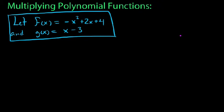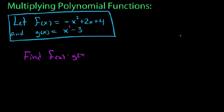We have f of x and g of x. F of x is a quadratic, or a second-degree polynomial, and g of x here is a first-degree linear polynomial. Let's go ahead and find, for our first example, f of x times g of x — the product of these two functions.